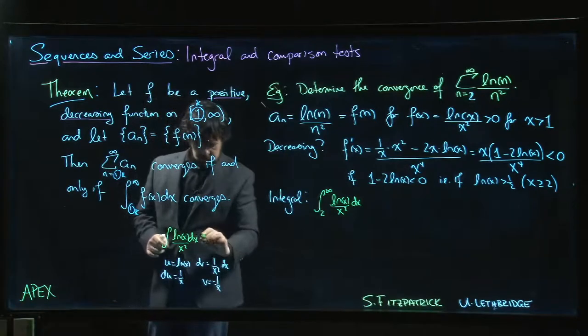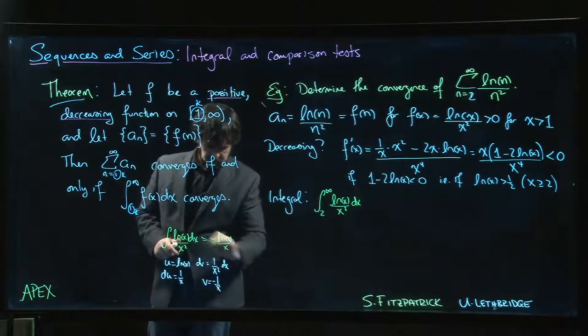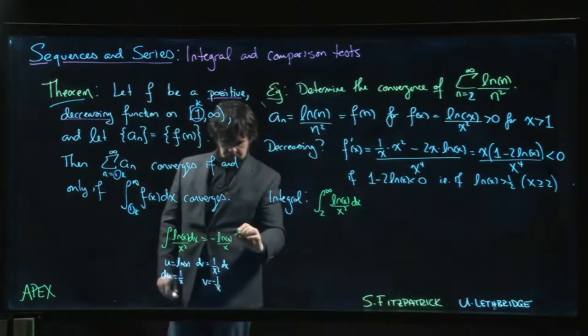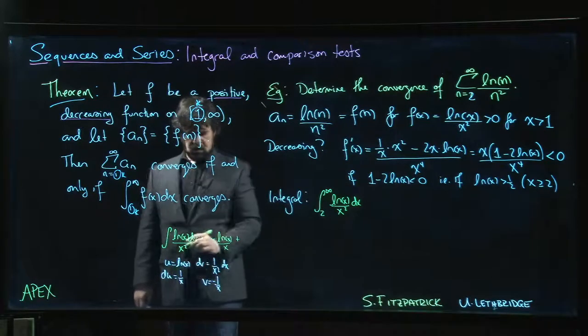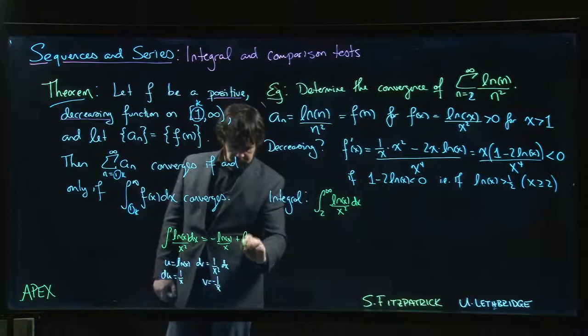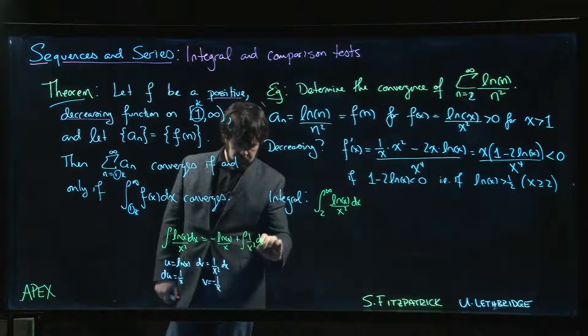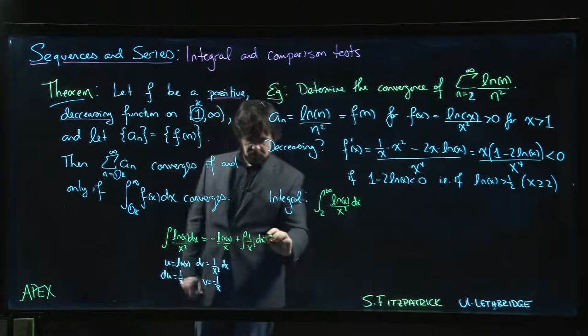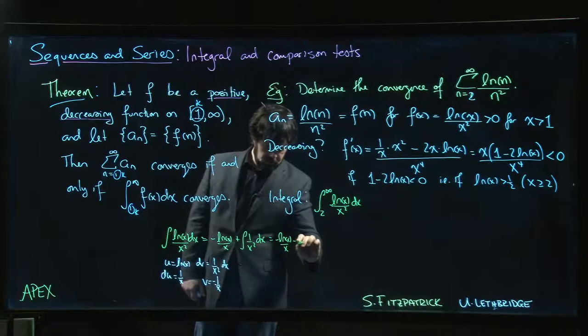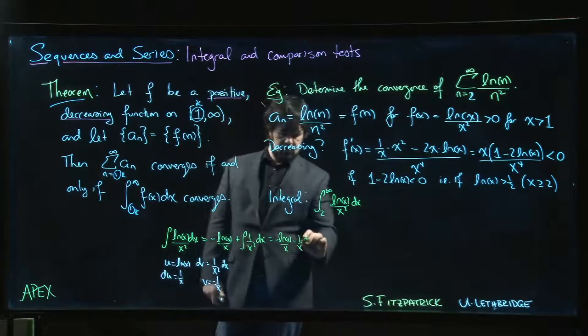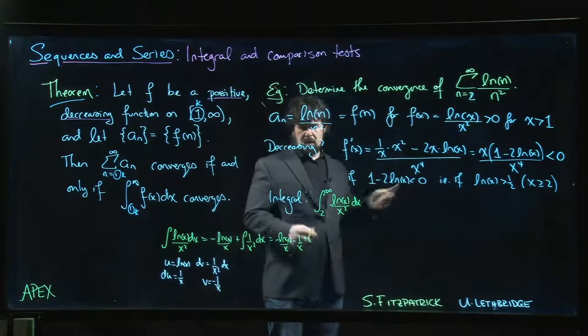So we get minus log x over x plus the integral of v du. So plus the integral, plus because of the minus sign there, plus the integral of minus of 1 over x squared. So we get minus log x over x minus 1 over x, plus your c if you want to put the c in there.